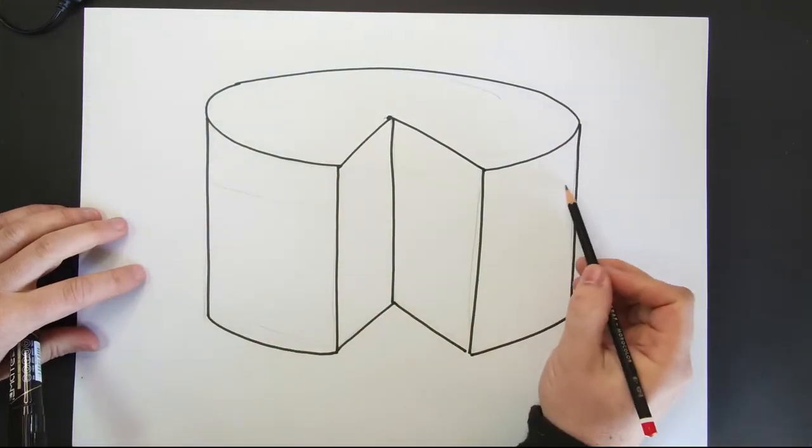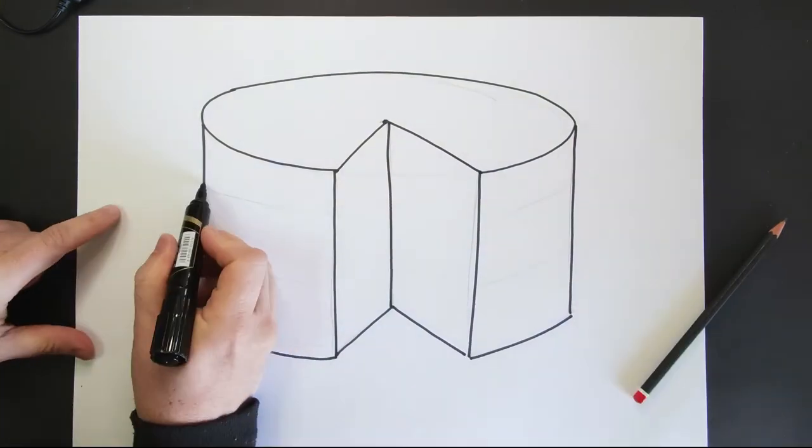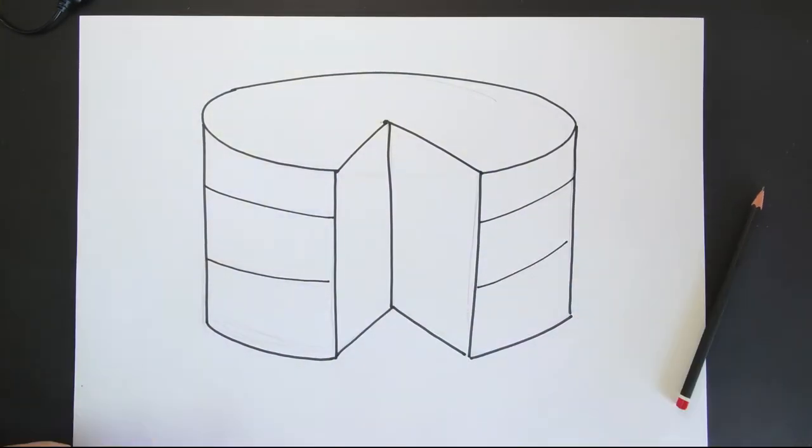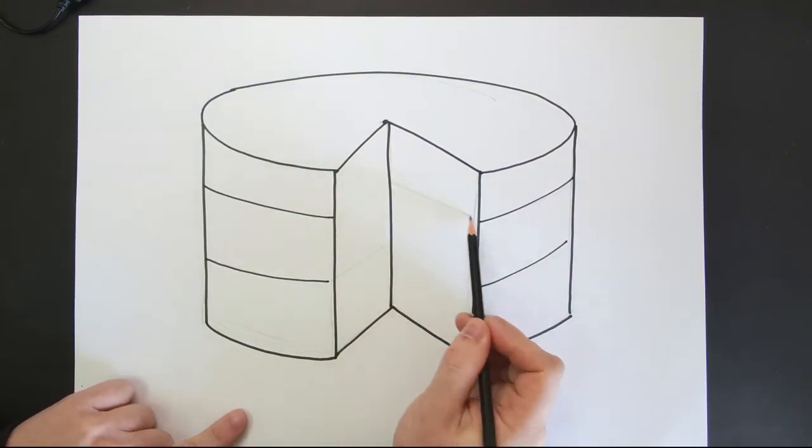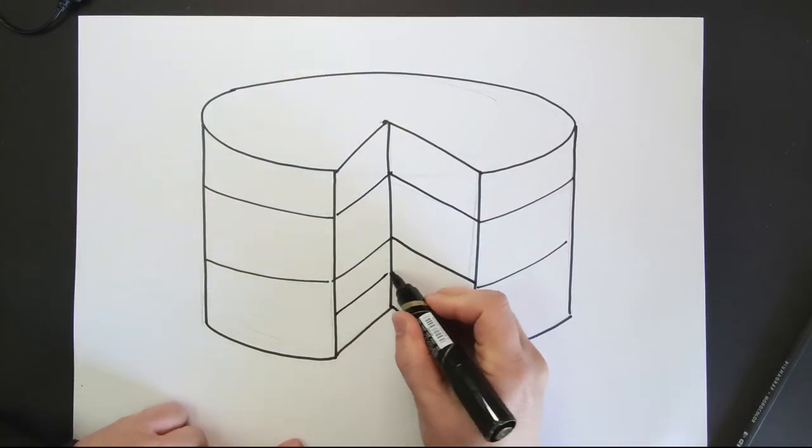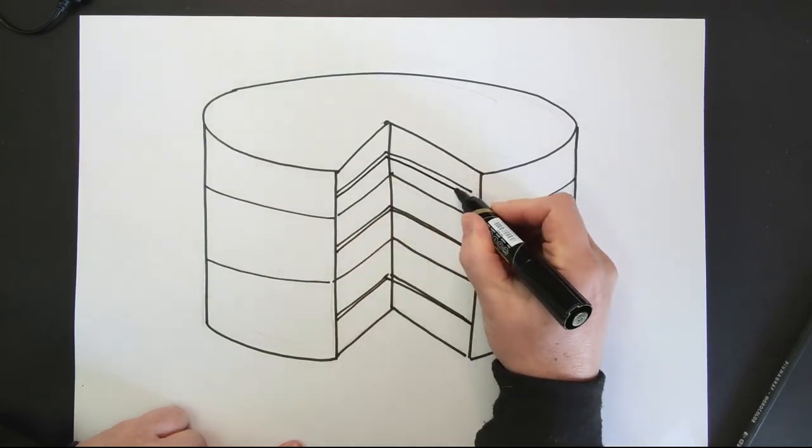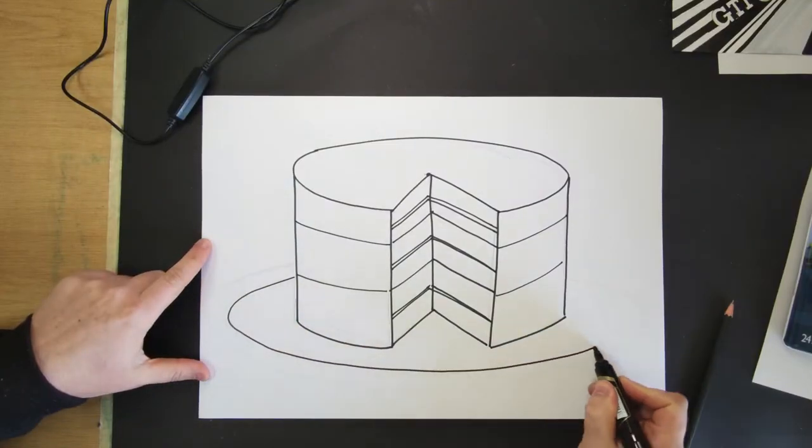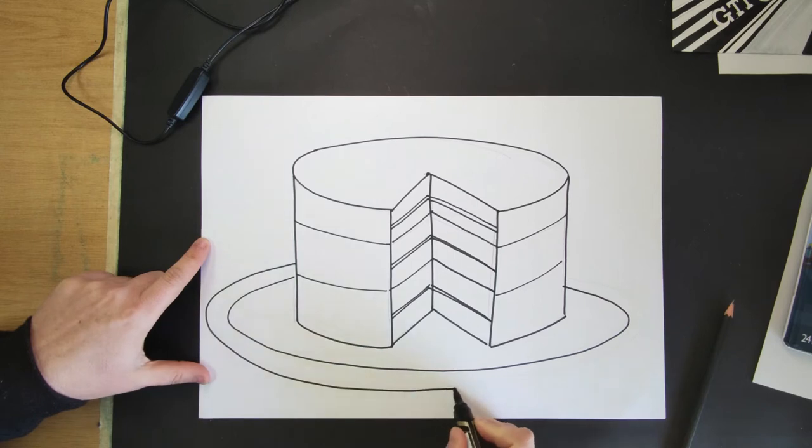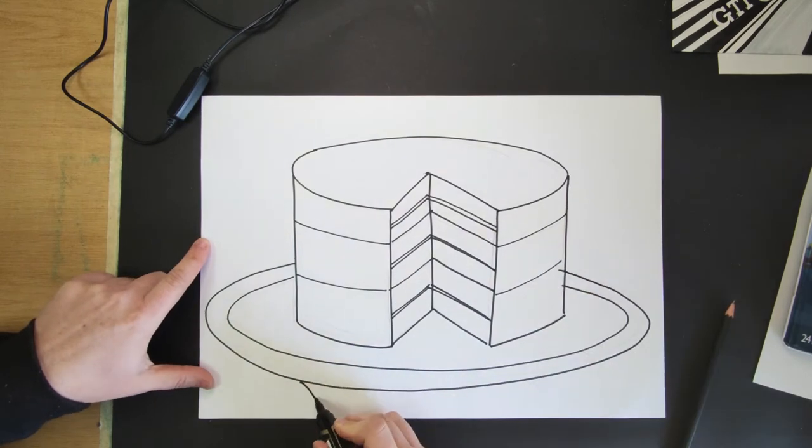Our cake is going to be made up of various layers. Add three layers on the outside of the cake and six layers on the inside of the cake. Draw two more ellipses at the bottom of your cake to form the saucer that the cake is going to sit on.